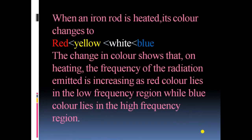For example, when we heat an iron rod, its color changes first to red, then red changes to yellow, yellow changes to white, and white changes to blue. The frequency of blue color is the highest and the frequency of red color is the minimum. So the change in color shows that on heating, the frequency of radiation emitted is increasing, as red color lies in the low frequency region while blue color lies in the high frequency region.